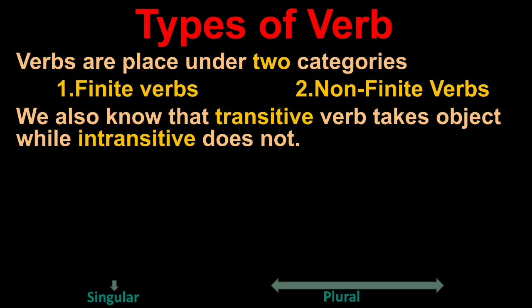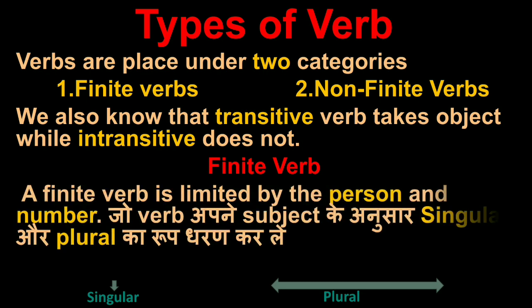Transitive verb object leta hai, intransitive verb nahi leta hai. And what is finite verb? A finite verb is limited by the person and number. The verb and subject can start singular or plural. This means finite verb changes according to whether the subject is first singular or plural. The verb also changes accordingly.